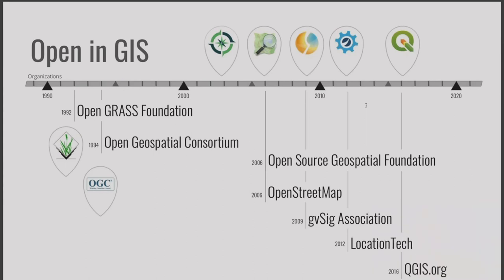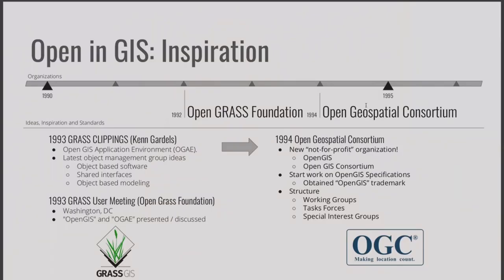Community is a grassroots effort — in this case, literally the GRASS project. The Open GRASS Foundation started in 1992, and one of the first things it did coming out of the GRASS open source project was start to look at interoperability. You can see that all of these organizations have picked up that challenge — the OGC, OSGeo, OpenStreetMap, and so forth. The original inspiration was provided by a fellow called Ken Gardalas in a GRASS newsletter, where he outlined how we, as an industry, could start to share data between our applications.